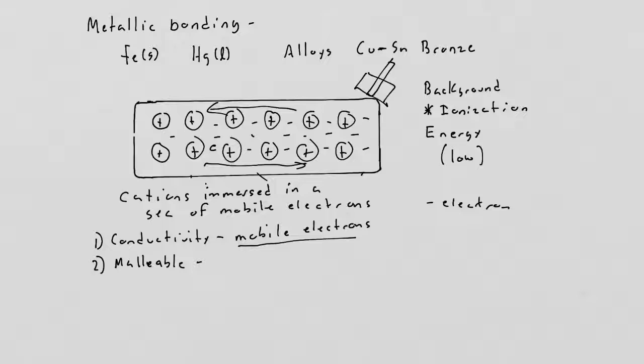If you hit them with a hammer, the electrons almost act as a buffer between the cations. The cations don't repel because whenever two cations get close, the negatively charged electrons are attracted to those cations and move in between them to keep them from repelling. The mobile electrons act as a buffer and prevent cation-cation repulsion.